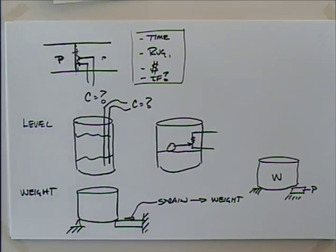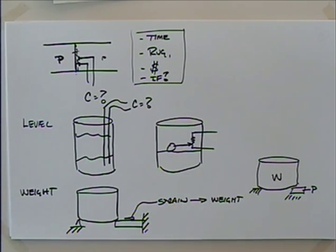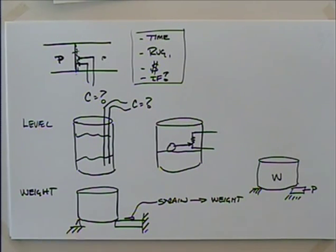We're getting close to a stopping point for today. We have one section left: code conversion — how to convert from base-10 to base-2 and back, so we can put information in and get information out. We'll talk about that next time, along with laboratory number seven. That will finish up our digital unit, and a week from today we have the exam.